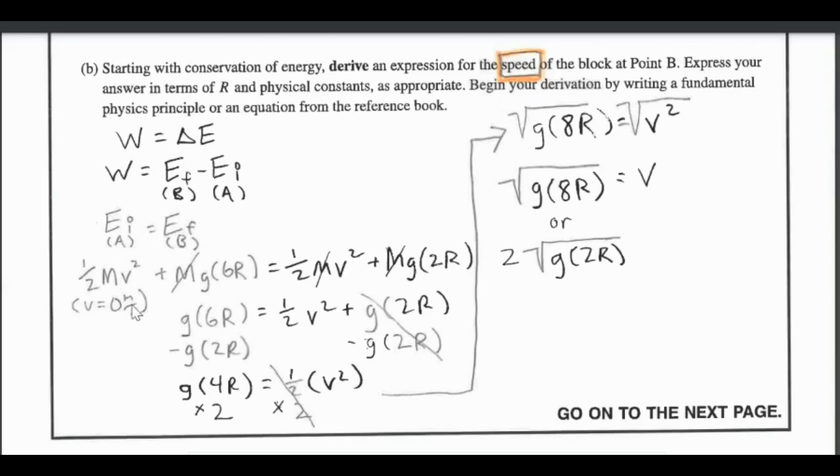At our first position it starts at rest so we have one half mv squared for the kinetic energy which is zero joules, and then for the gravitational potential energy it's mgh and our first h is 6R. For our second location it has a height of 2R so instead of mg(6R) I replace that with 2R. We are going to have some kinetic energy so it's going to be one half mv squared, but the masses cancel so it's just one half v squared.